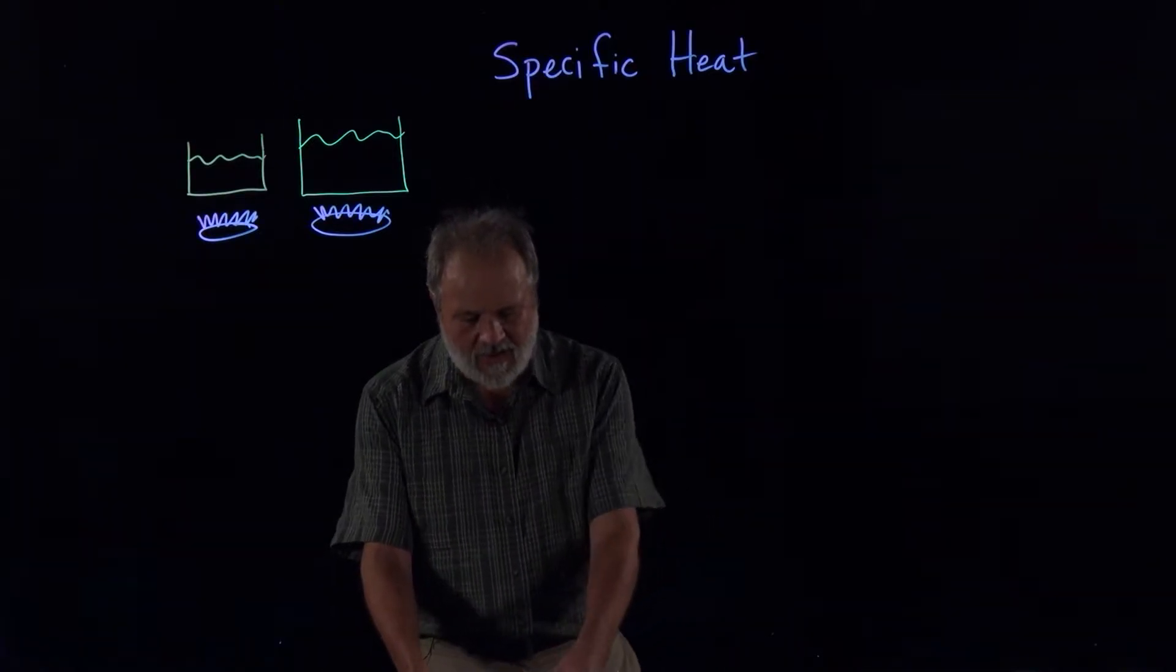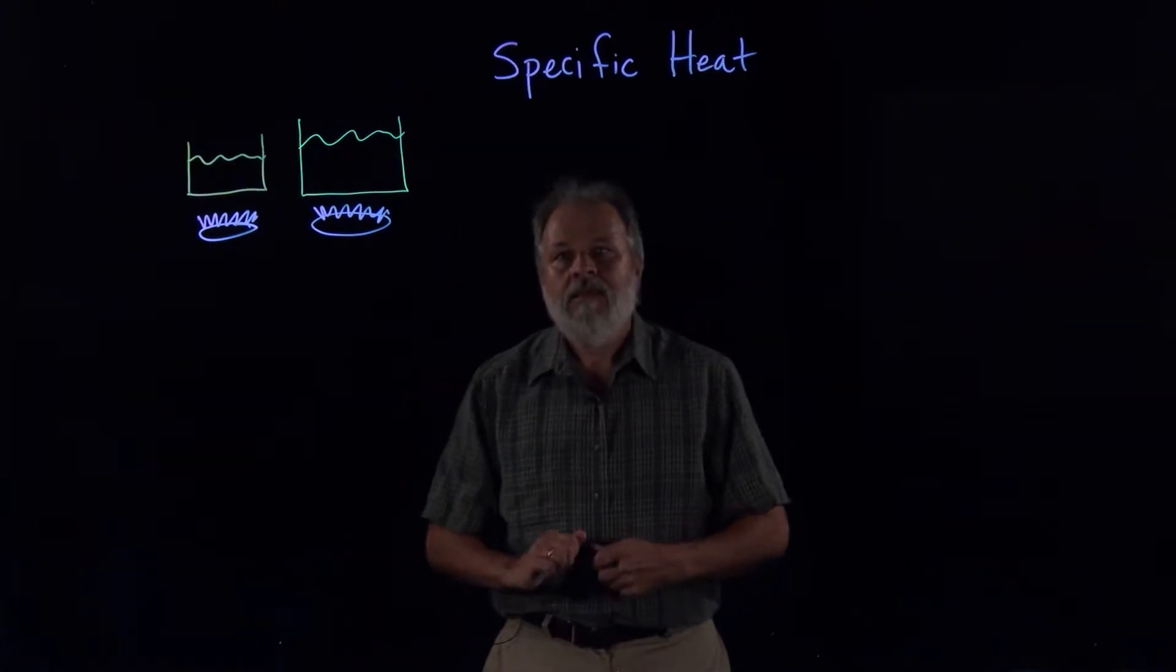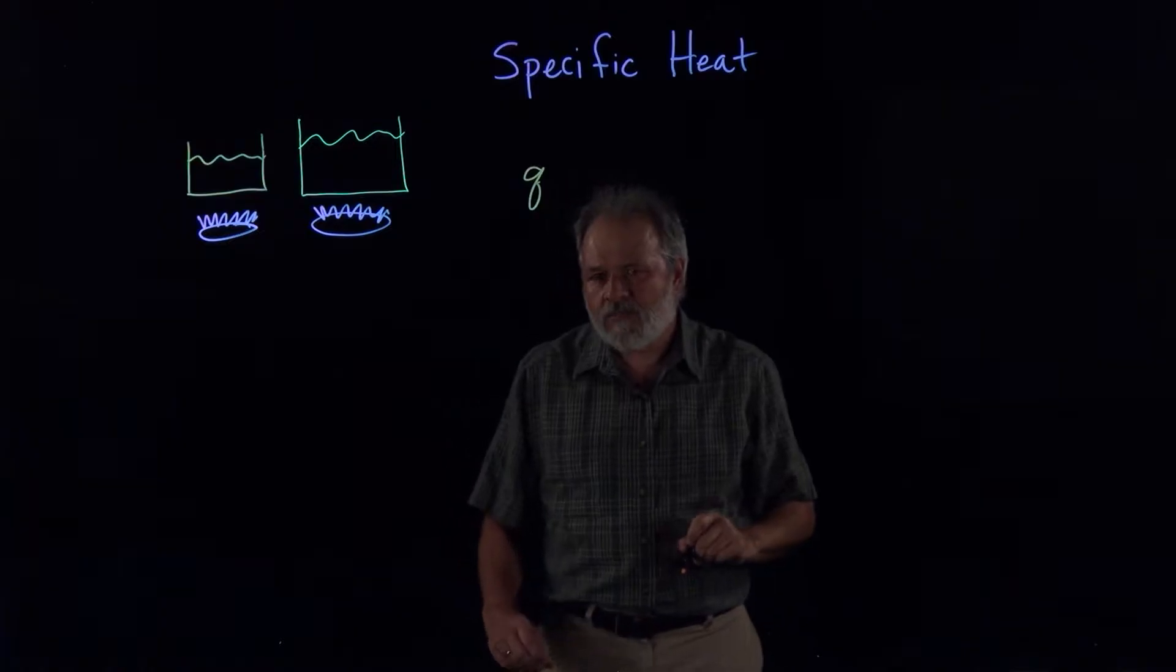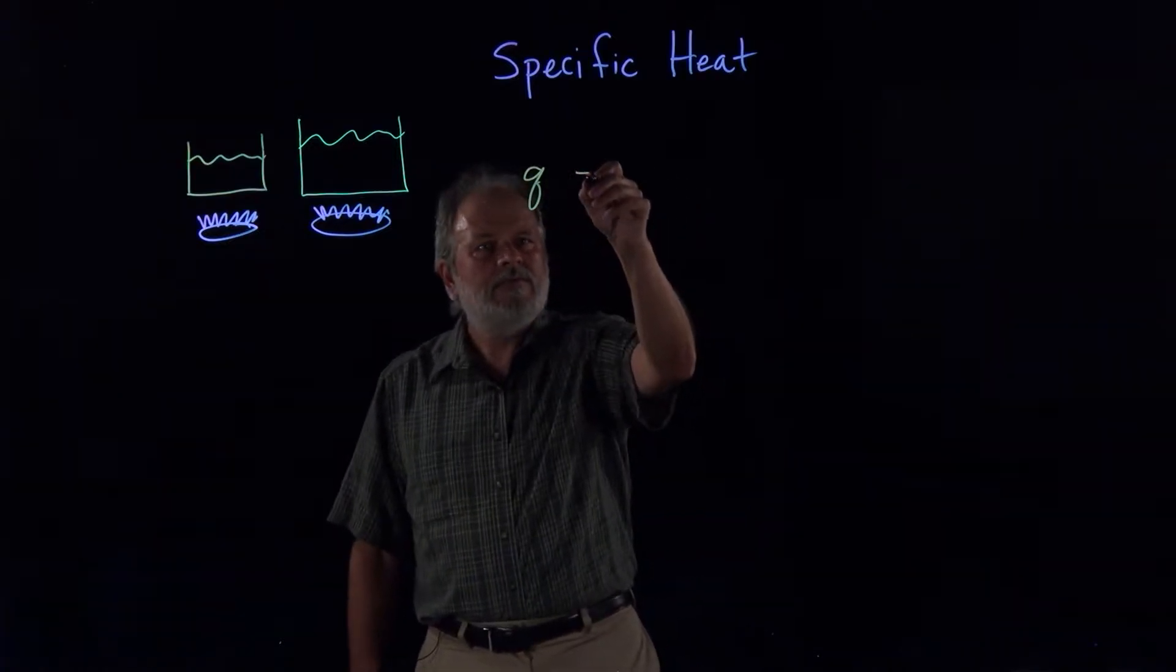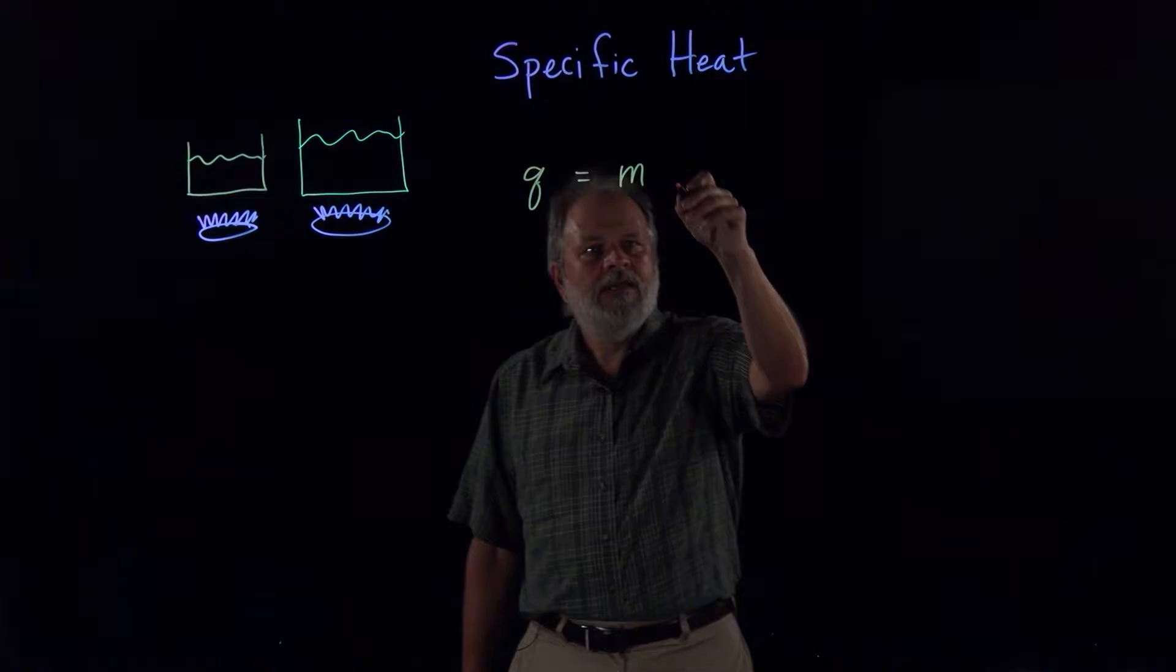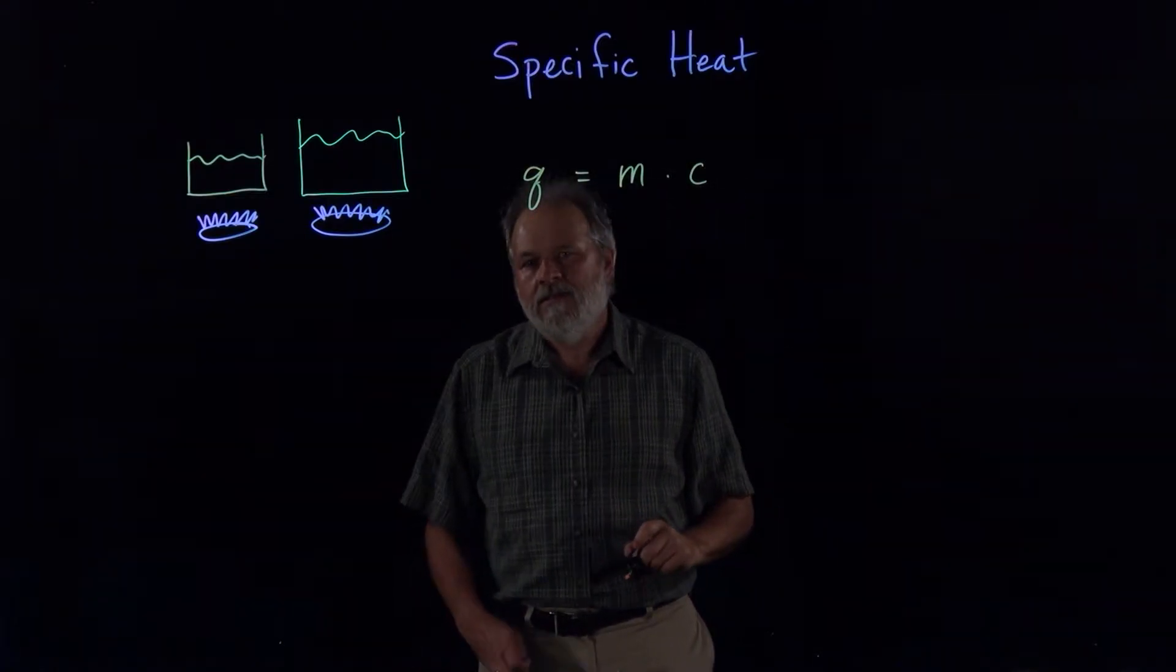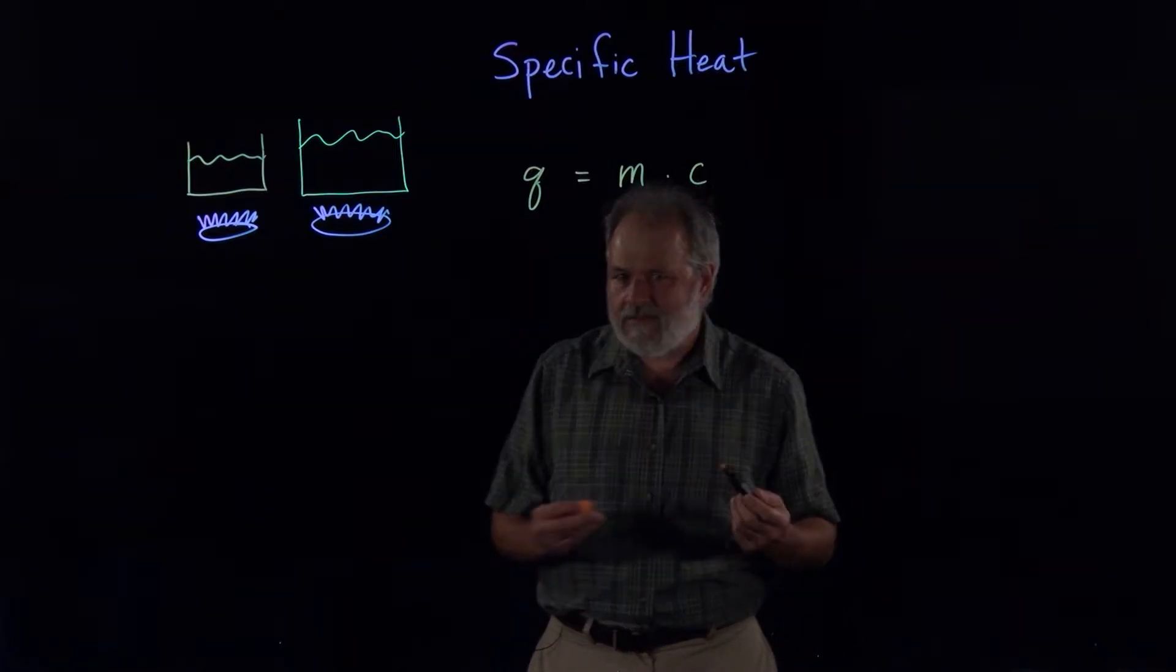So the equation that expresses all of these ideas is that the amount of heat, which we'll call by the letter small q, is equal to the mass, how much you're heating up, times a constant for that substance called the specific heat. So you're not expected to know any of these constants.